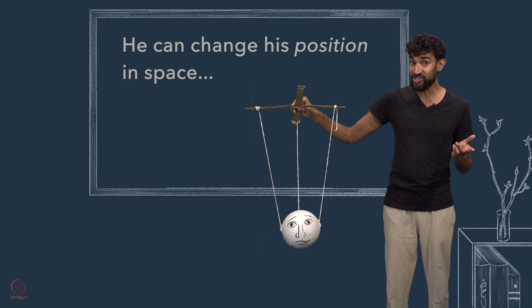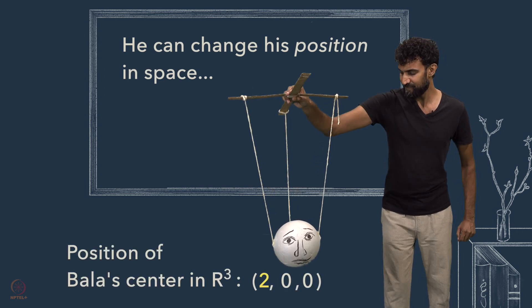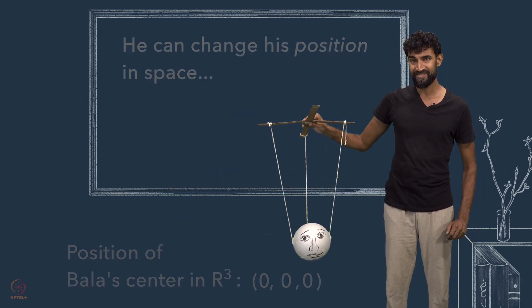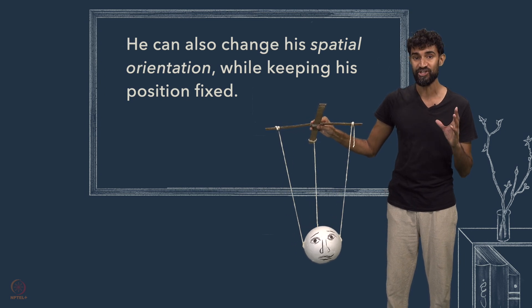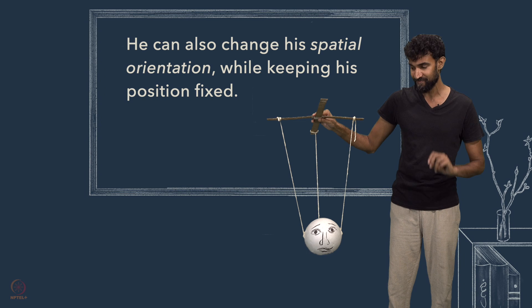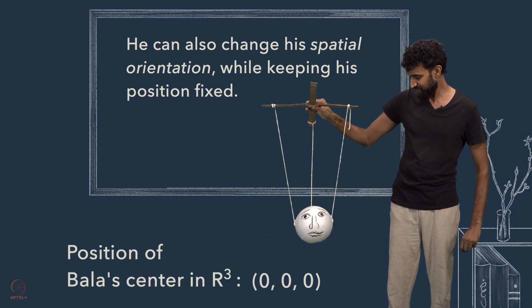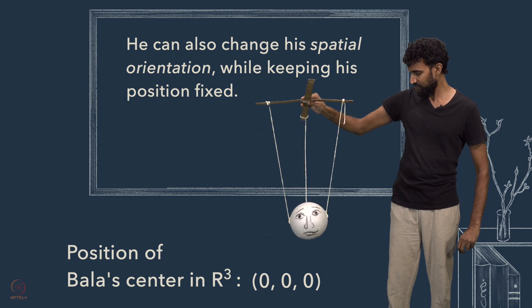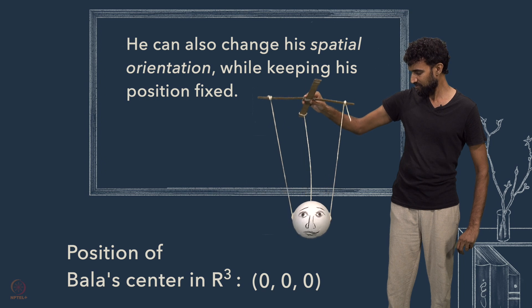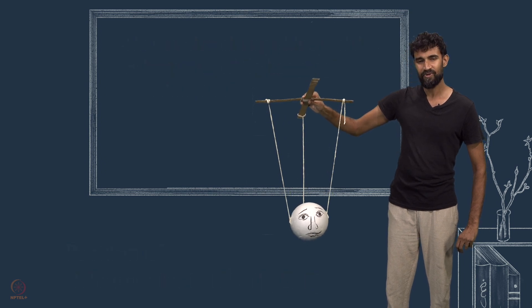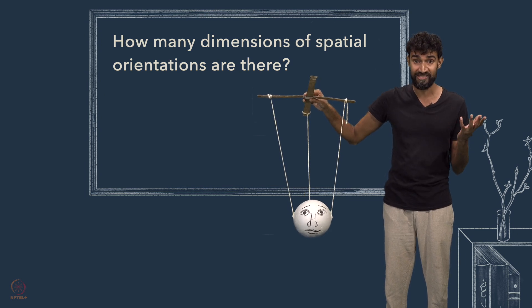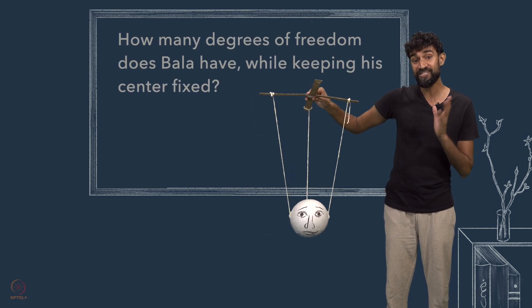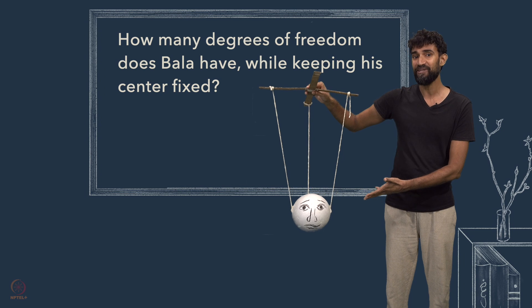Well, he can change his position in space. But, he can also change his spatial orientation, while keeping his position fixed. So, how many dimensions of spatial orientations are there? Or, to put it another way, how many degrees of freedom does Bala have, while keeping his center fixed?